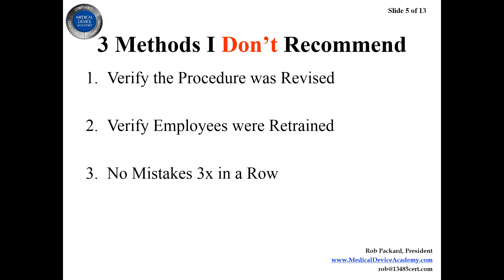Another method I see a lot, especially with contract manufacturers, is saying they'll check to make sure it doesn't happen in the next three orders. But if you only order something once every six months, you'll keep the CAPA open for 18 months before finding out whether it was effective — that's probably not a practical solution either.